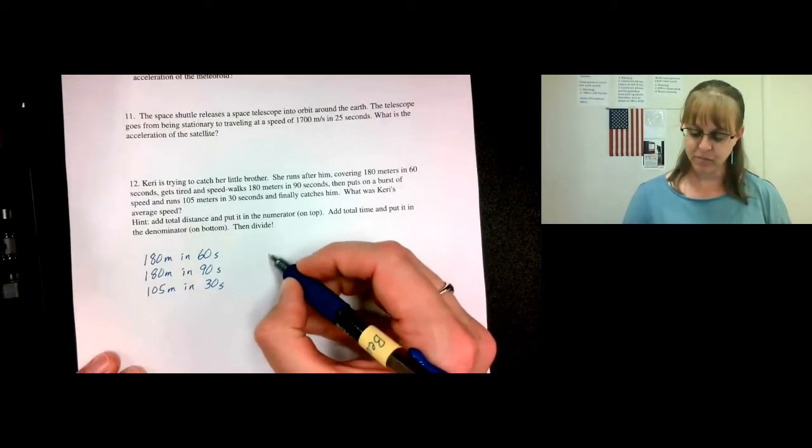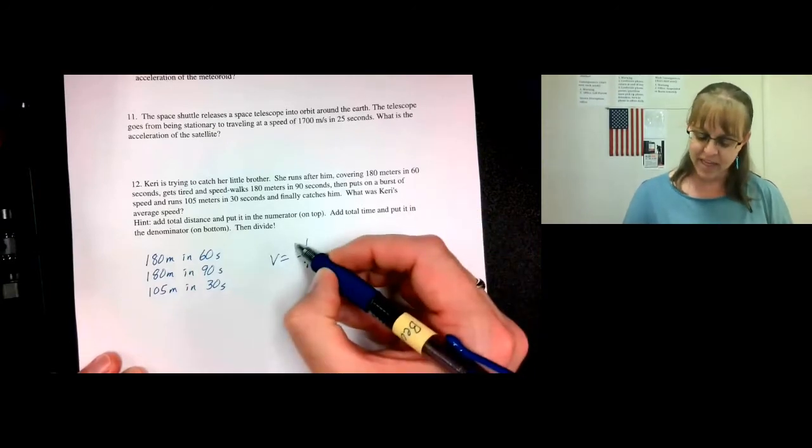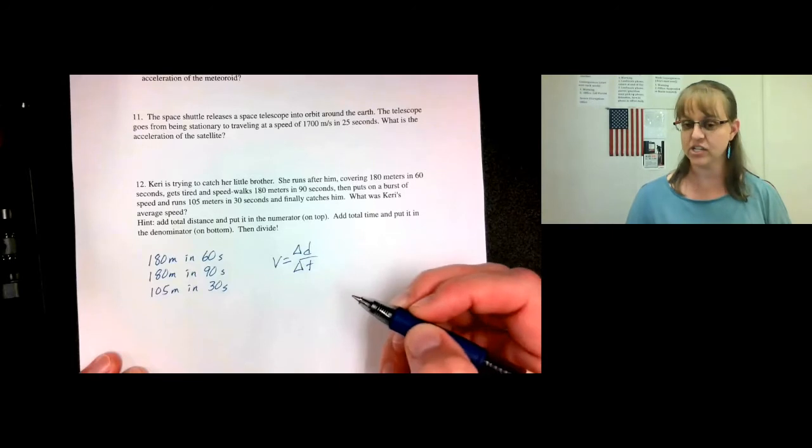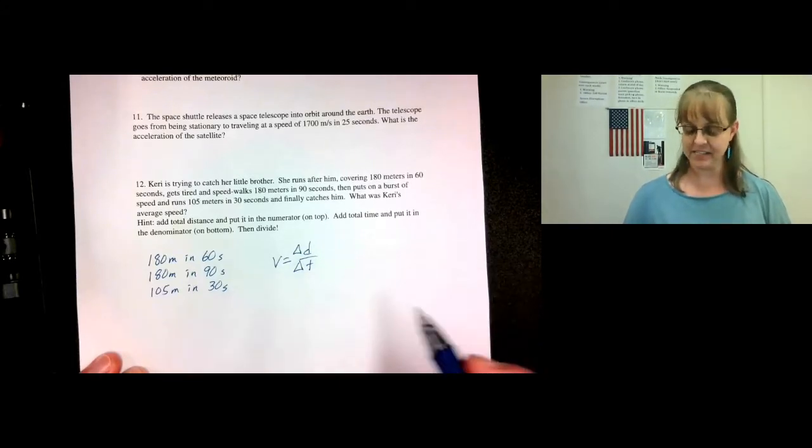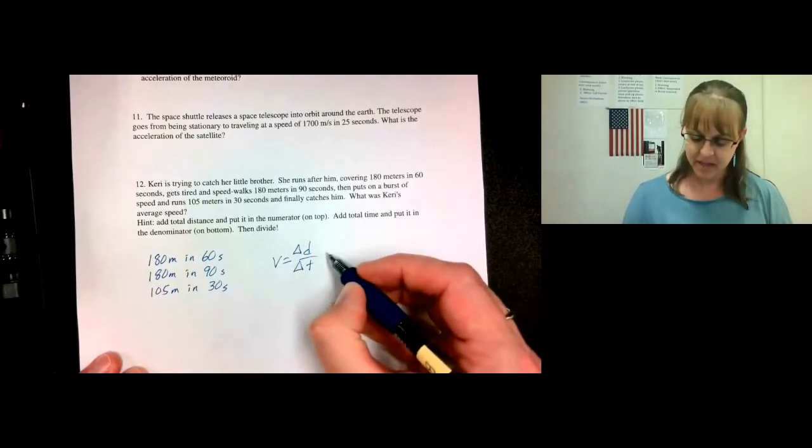The formula for velocity or speed is distance divided by time. When they put the little delta, change in distance over change in time, that just means that you add up all the different distances and you add up all the different times.